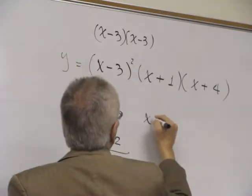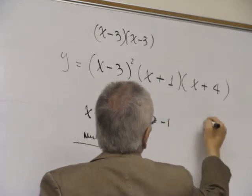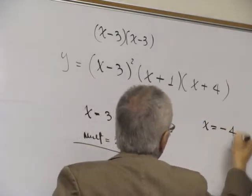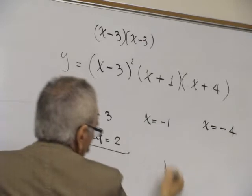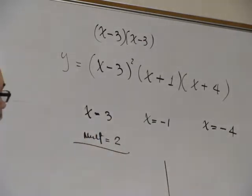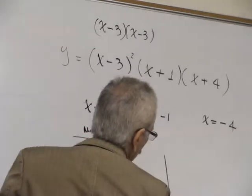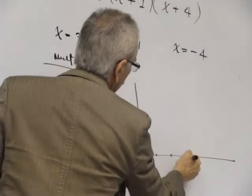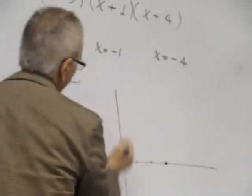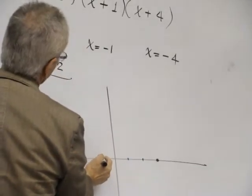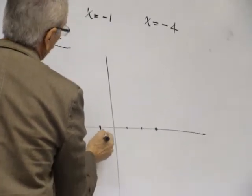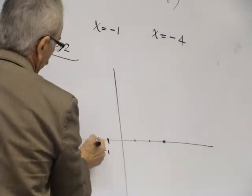From here you have x equals -1. From here, x equals -4. So if you are graphing, you have here 1, 2, 3. You have -1. You have -4.